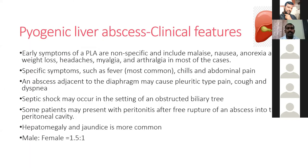Earlier symptoms of pyogenic liver abscess are non-specific: malaise, nausea, vomiting, weight loss, headache, and myalgia. The most specific symptoms are fever with chills and rigors. Abscess adjacent to the dome of the diaphragm may produce chest pain, cough, or dyspnea. Septic shock may occur in obstructive biliary cases. Some patients develop peritonitis due to rupture into the abdominal cavity. Hepatomegaly and jaundice are more common in pyogenic liver abscess.